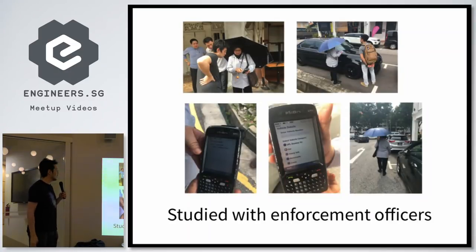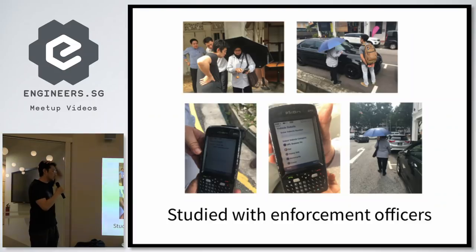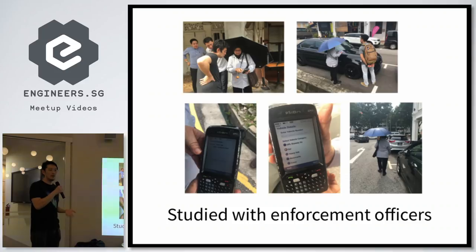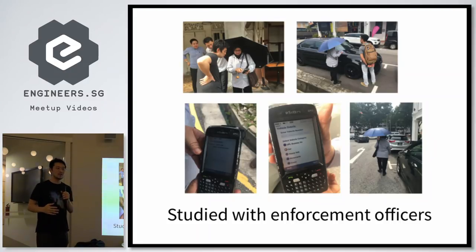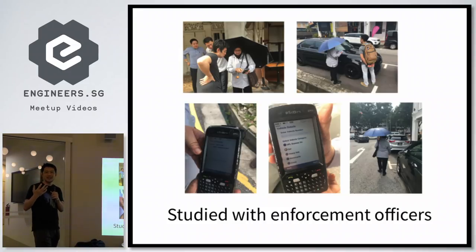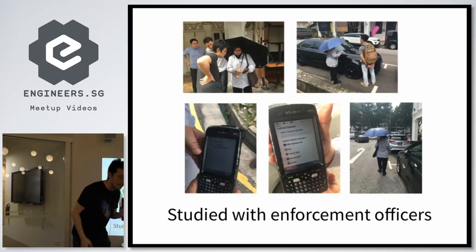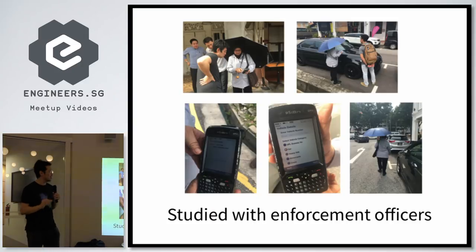The first thing we did was go meet with some of our enforcement officers. This lady had been doing it for about 20 years. We followed her around for a couple hours and tried to understand what her life was like and what her workflow was. One of the things we realized pretty quickly was that she was really, really good at what she did. You know those parking coupons with all the holes you poke in them? You might think the mental math is hard, but she would just walk up to a car, look at it for less than a second, and move on — and she was really accurate.